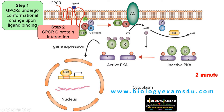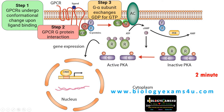In its inactive state, this G protein is bound to GDP. Step 3: The G alpha subunit of the G protein exchanges GDP for GTP. GTP-bound G protein is the active state of the G protein.